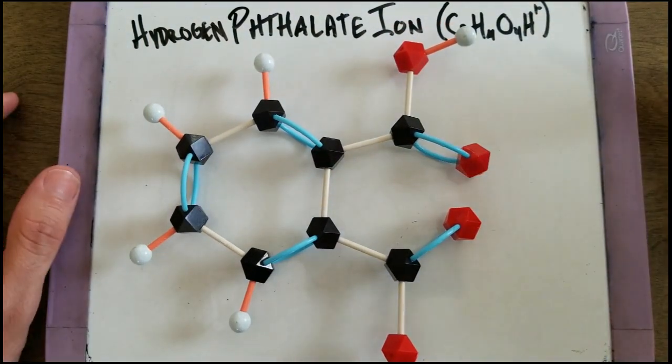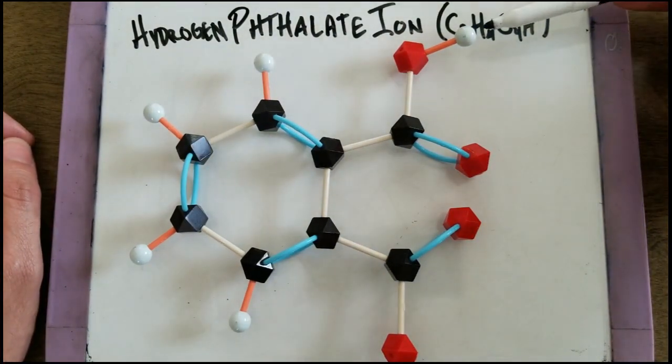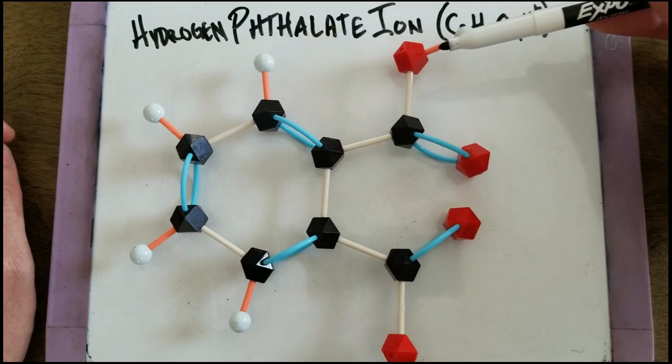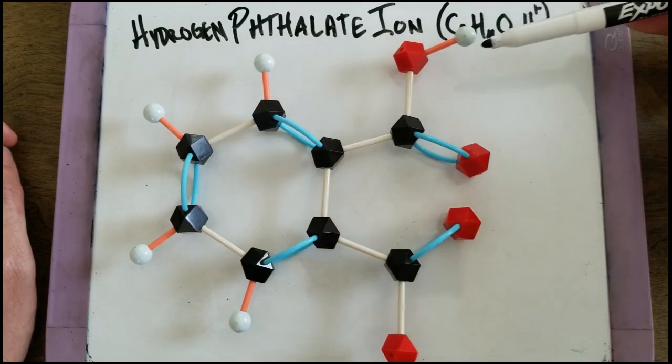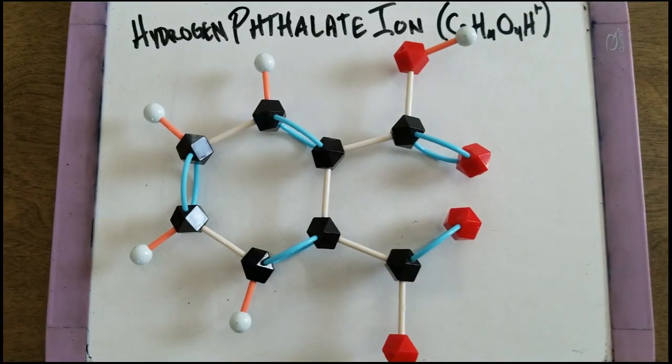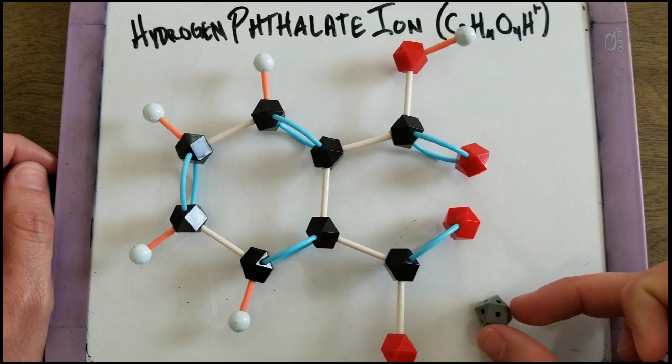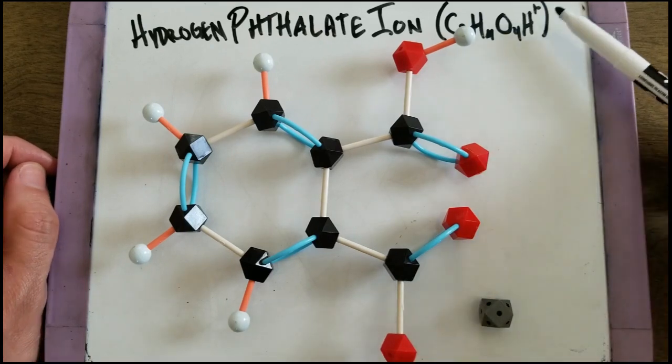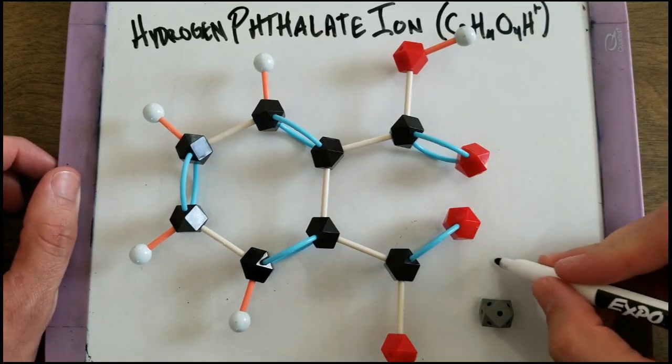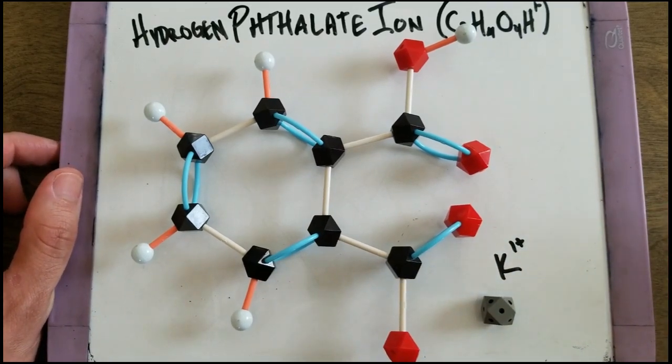The hydrogen phthalate ion is a phthalate with an extra hydrogen added on. It gets added on to an oxygen here, and that means that it is going to be a weak acid. This hydrogen can be lost in reactions. To make a potassium-hydrogen phthalate substance, an extra potassium is added to balance the one-minus charge, but is only attracted because of ionic bonds.